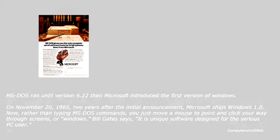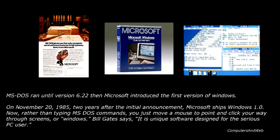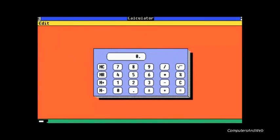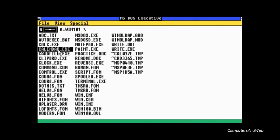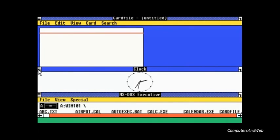MS-DOS ran until version 6.22, then Microsoft introduced the first version of Windows in 1985. Windows 1.0 ran as a graphical, 16-bit multitasking shell on top of an existing MS-DOS installation, providing an environment which could run graphical programs designed for Windows.